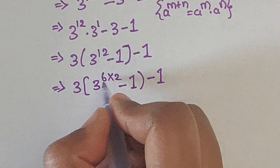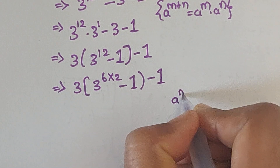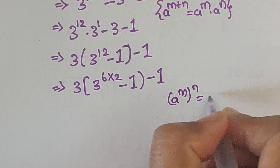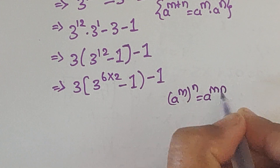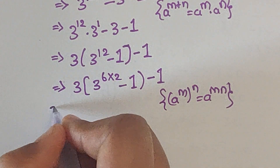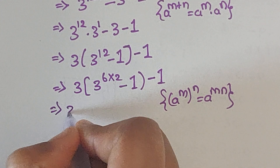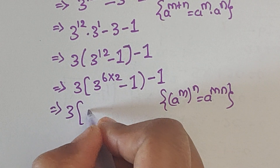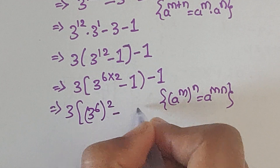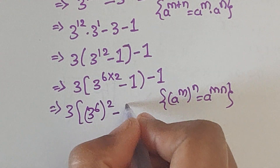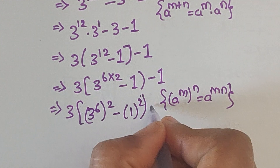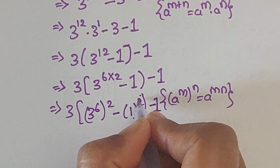We can write 3 to the power of 12 as 4 times 3, so we can take out the common. Now we apply the formula: a to the power of m, whole to the power of n, equals a to the power of m times n. Using this formula, we can write 3 times (3 to the power of 6, whole to the power of 2), minus 1 whole square, minus 1.